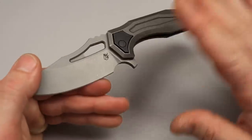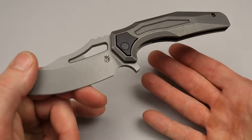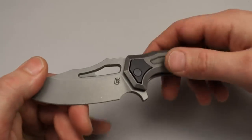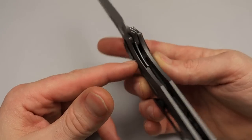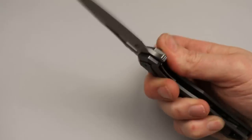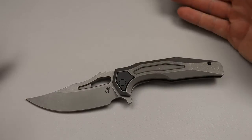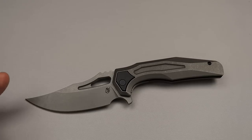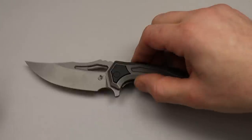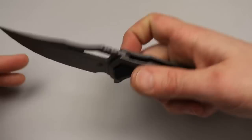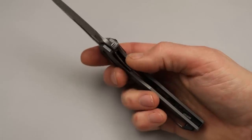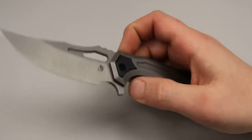The liner is steel even though it could be titanium with a lock bar insert. I'd like that a little bit better, but it's really not that big of a deal because either way it probably would have had a steel lock bar insert. I've seen Reate do titanium liners with no lock bar insert and they work great.